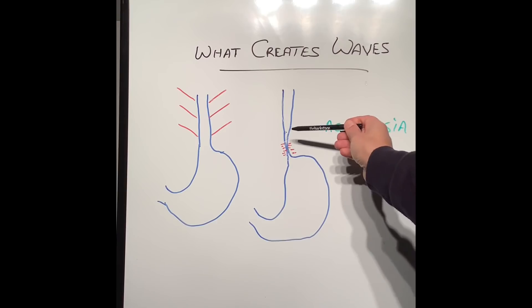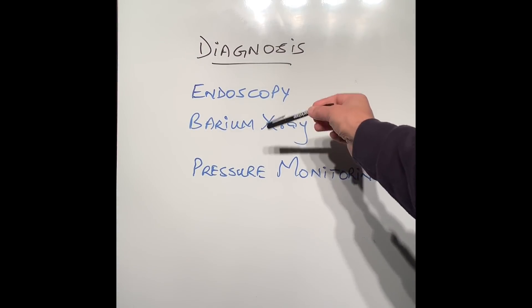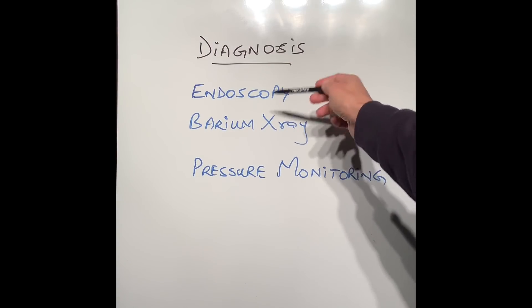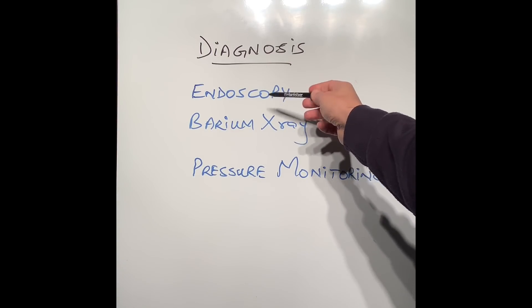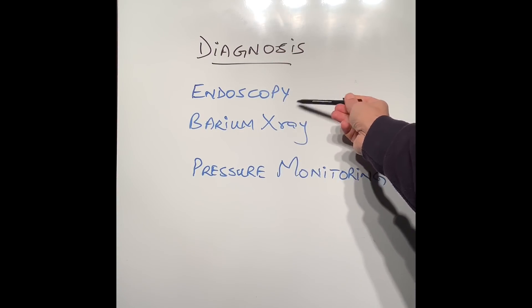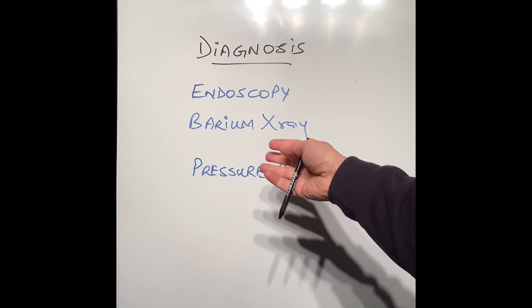There are three simple tests which can diagnose these conditions. One is endoscopy, which is a camera of the stomach. Endoscopists put the camera through the mouth or nose into the esophagus. They can see the esophagus being too large or too tight at the bottom end, and they can also see all the food debris in the esophagus, which means the esophagus is not emptying properly.